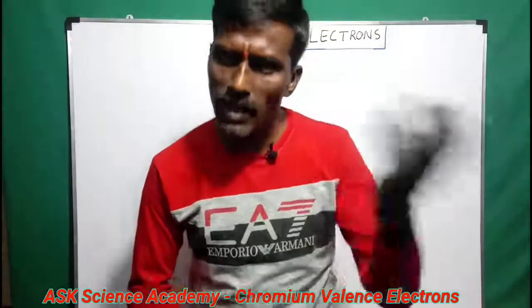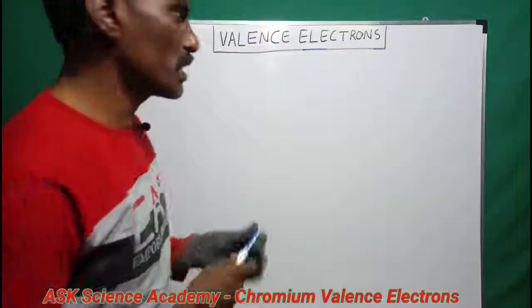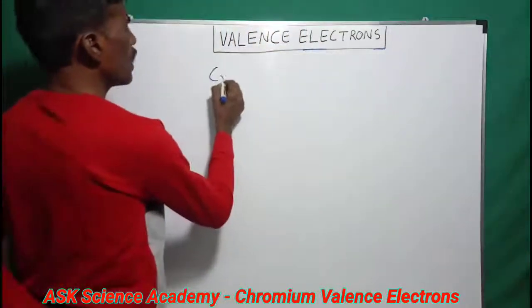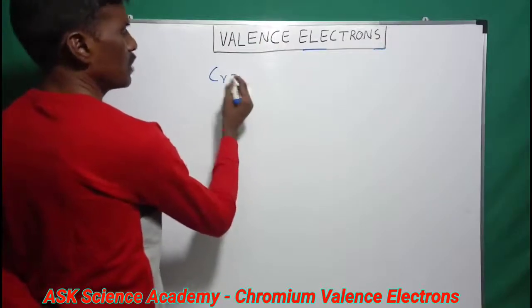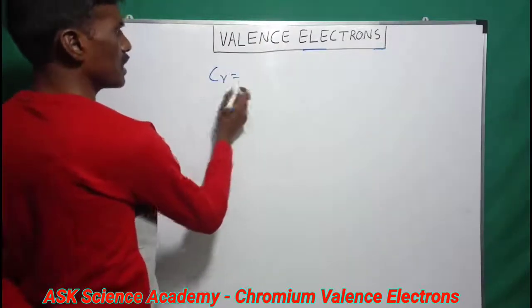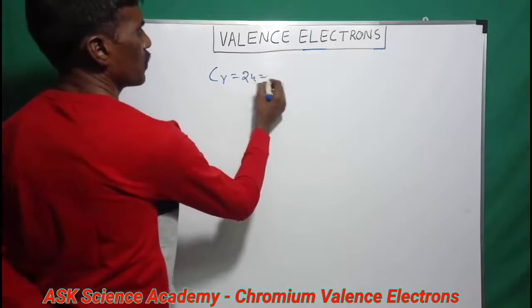So chromium — we are going to find its valence electrons in this class. Chromium is a d-block element and a transition metal. Its symbol is Cr and its atomic number is 24.